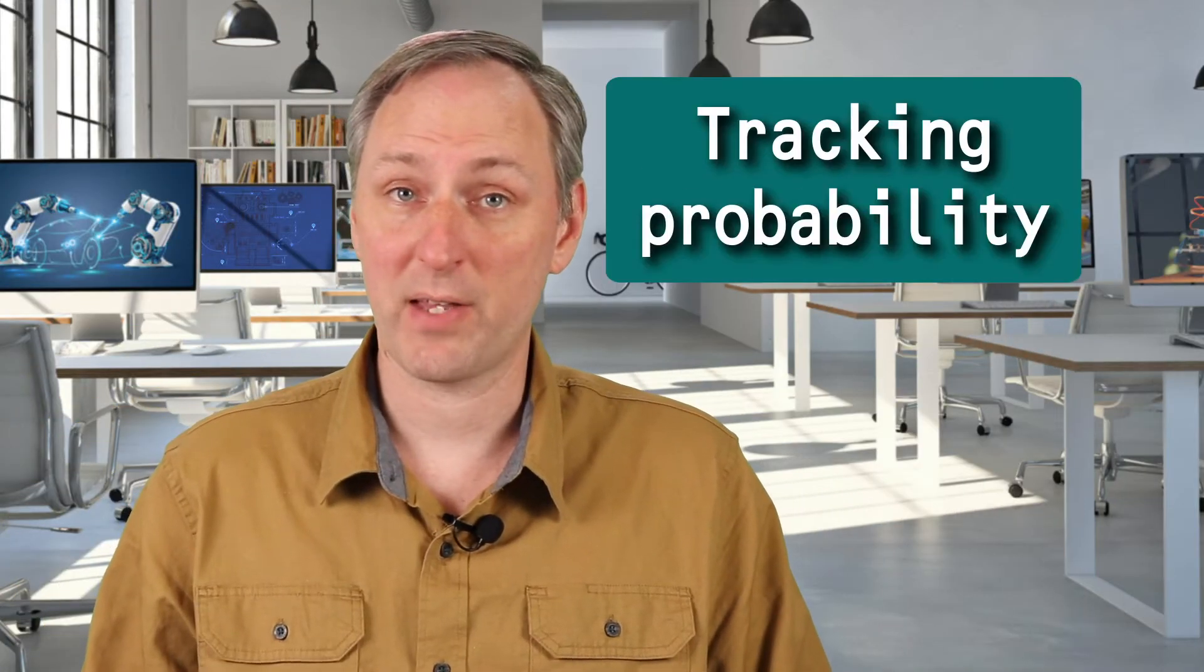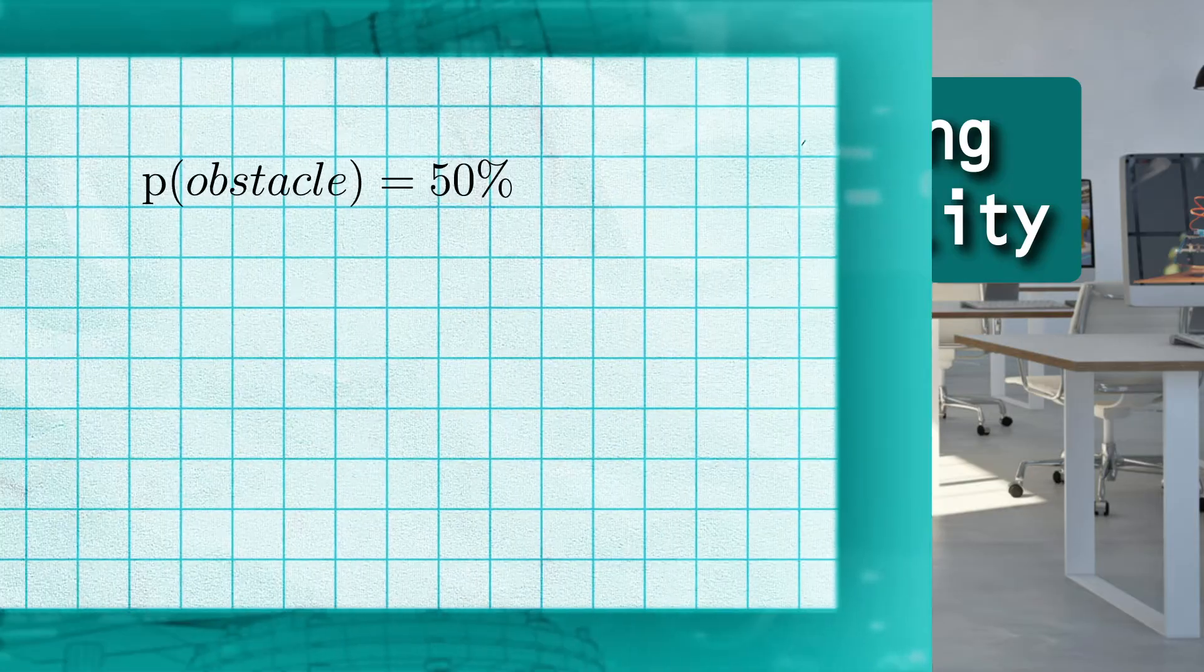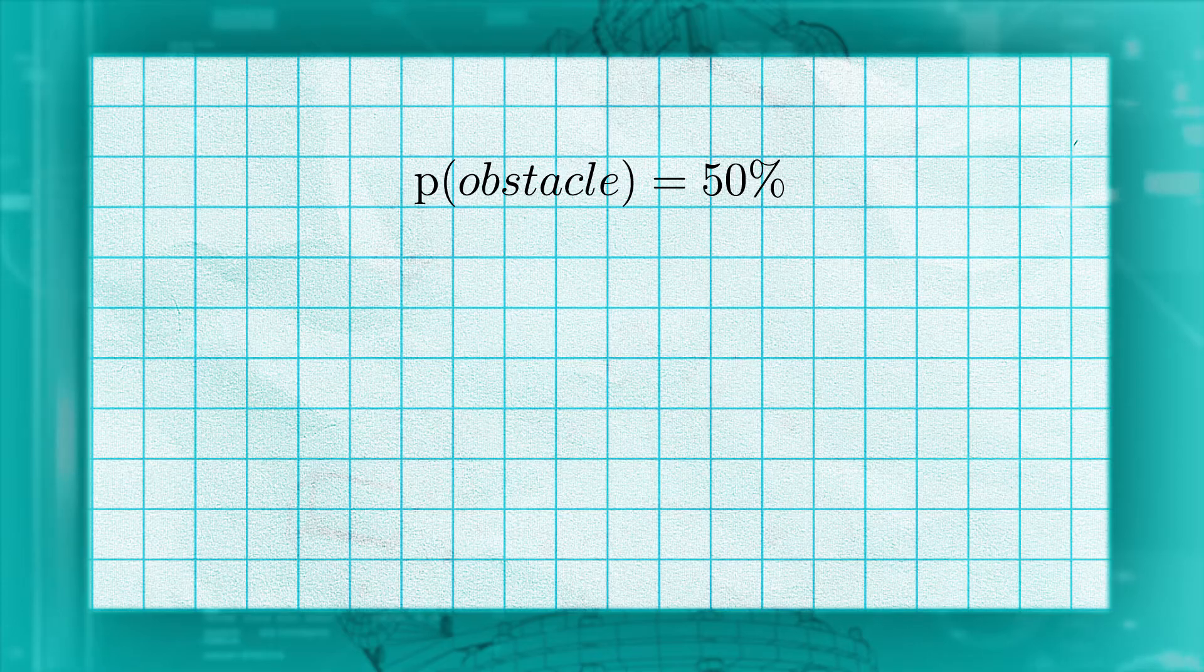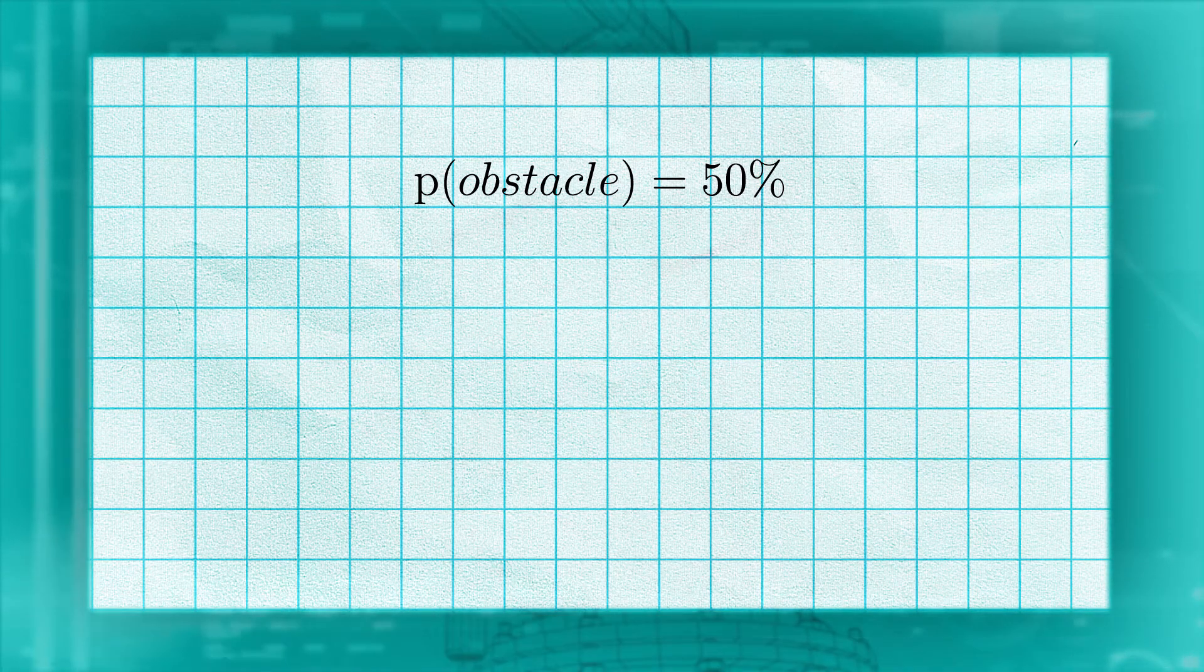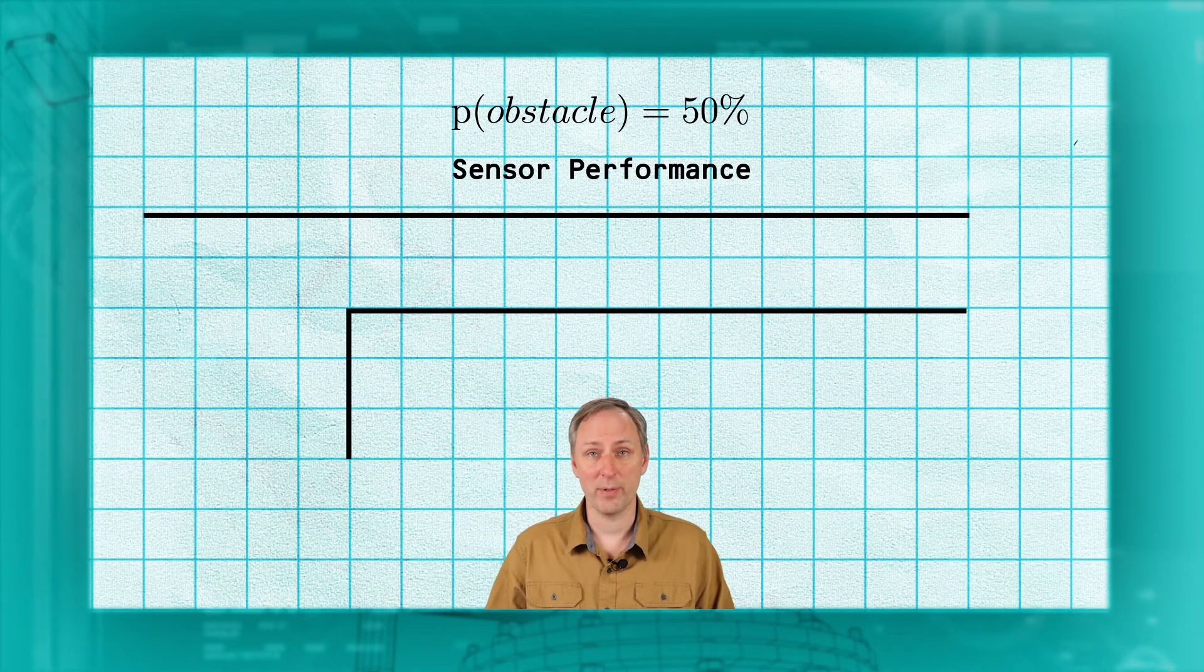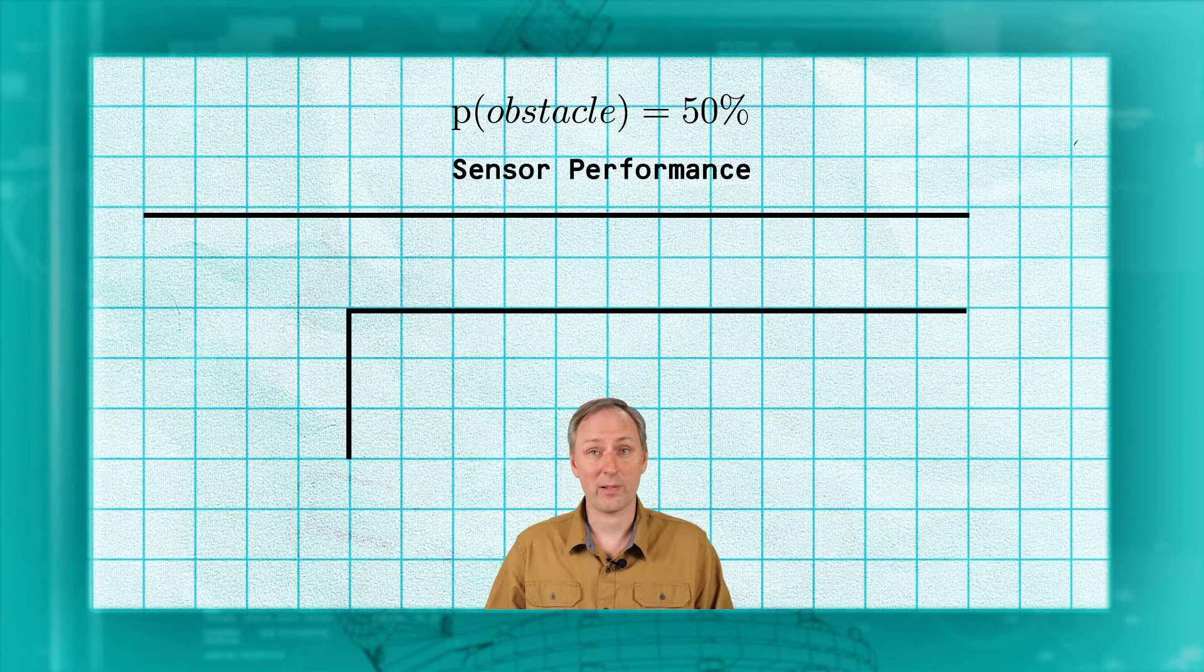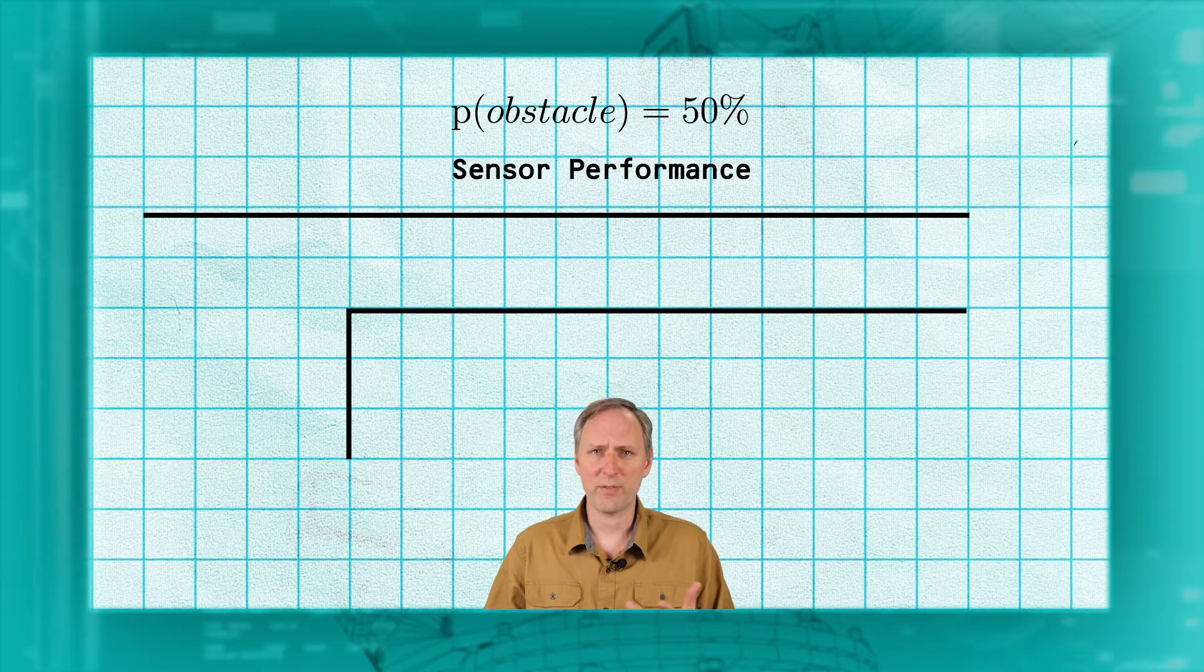One way to keep track of our belief that a cell contains an obstacle is to keep track of the probability. We will start off by assuming that any cell could either have an obstacle or not, with 50% probability of each. We will also need to know a little bit about our sensor capabilities, how likely it is to detect an obstacle, and how likely it is to correctly identify a clear cell.